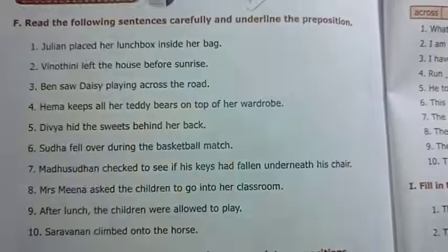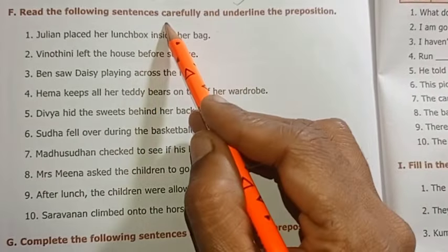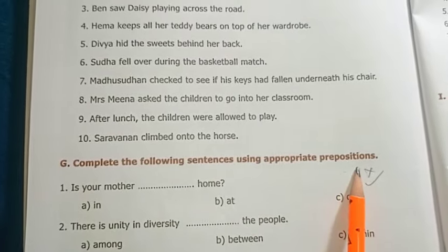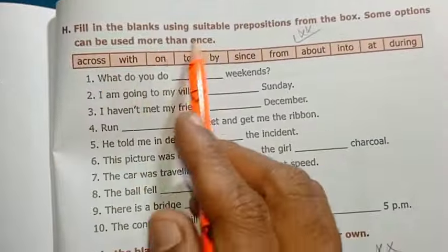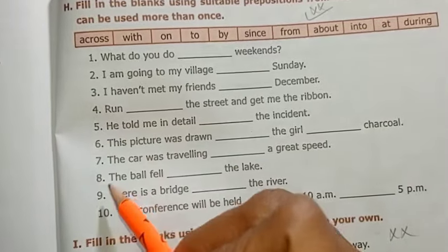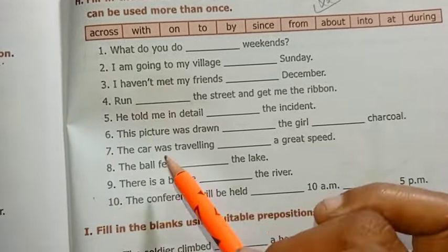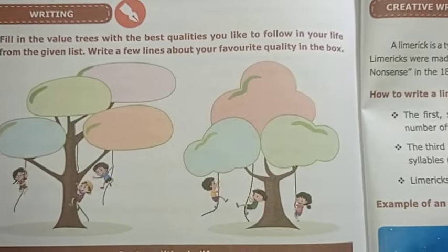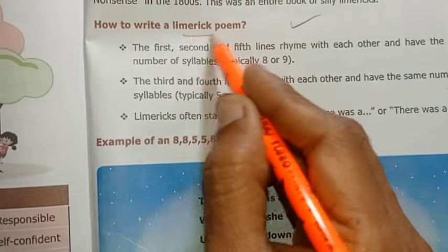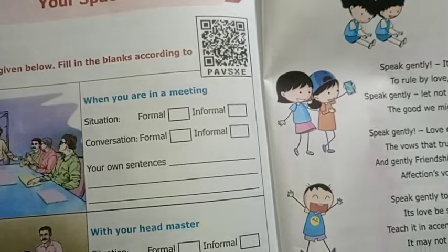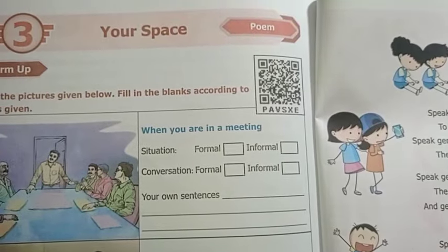Next, prefix and suffix in the exercise. Refer page number 146, 147 — pictogram. Preposition, page number 150 — read the following sentences carefully, underline the preposition, it is important. Complete the following sentences using appropriate preposition — very important. Fill in the blanks — two questions. One-mark grammar part — don't miss it, prepare it. H and I, page number 151 and 153.